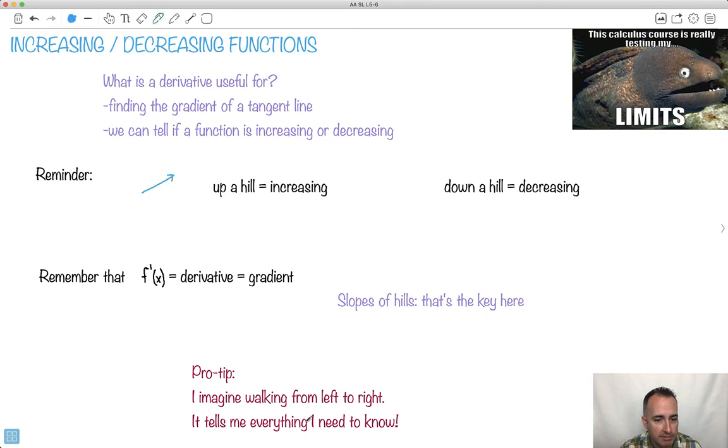As you walk from left to right, if you've got a graph, as you walk from left to right, if you're going up a hill, we say it's increasing. If something is down a hill, like it's going like this right here, we say it's decreasing.